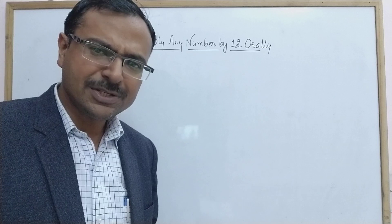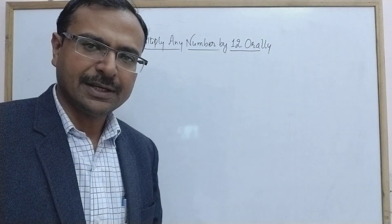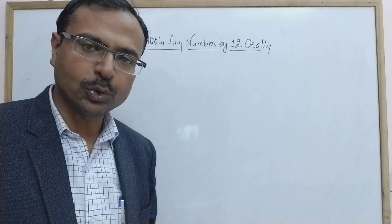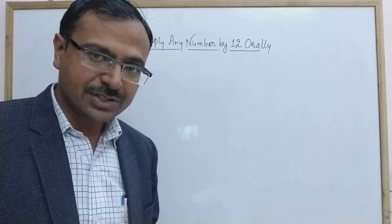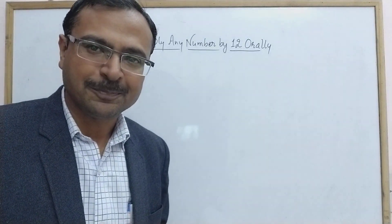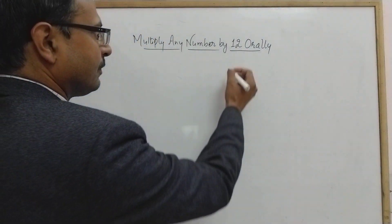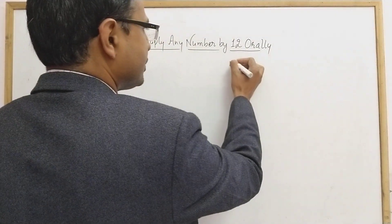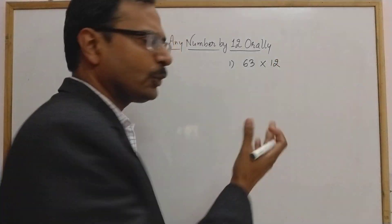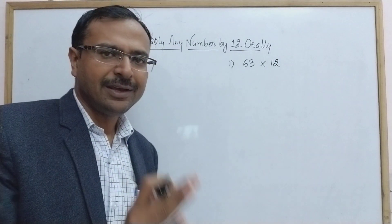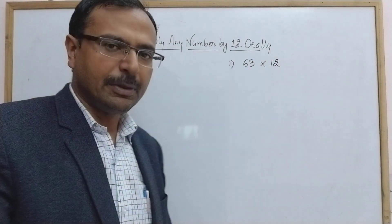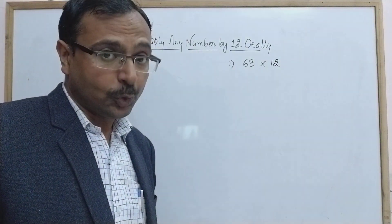Let me introduce the method using a two-digit number multiplied by 12, then I'll move on to three-digit, four-digit, five-digit, and even seven-digit numbers. Suppose you need to multiply 63 by 12. You can do it orally — and you don't need to count through the table of 12. That's the beauty of this method.